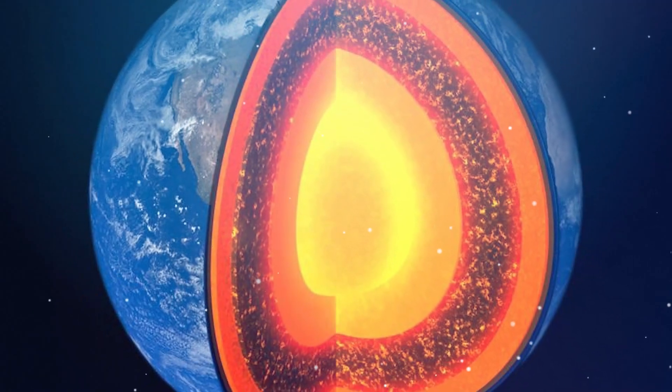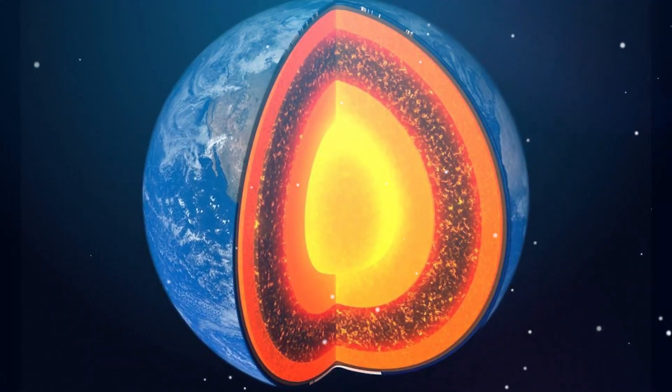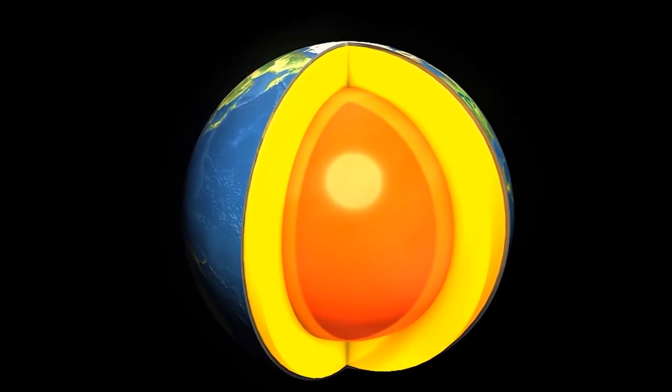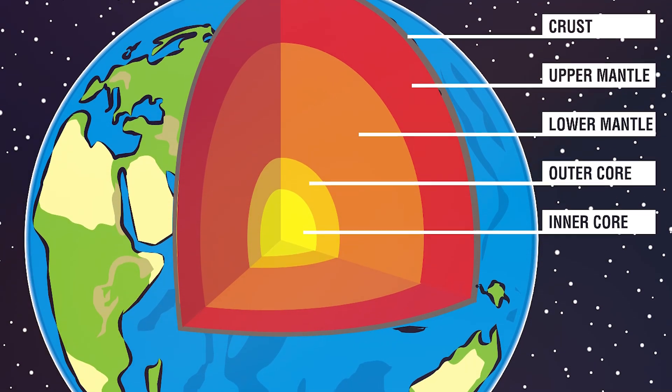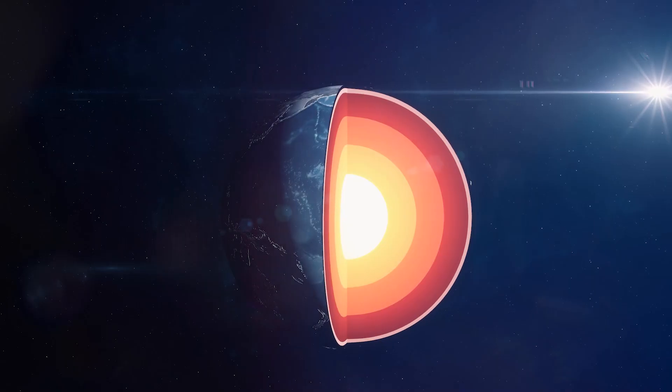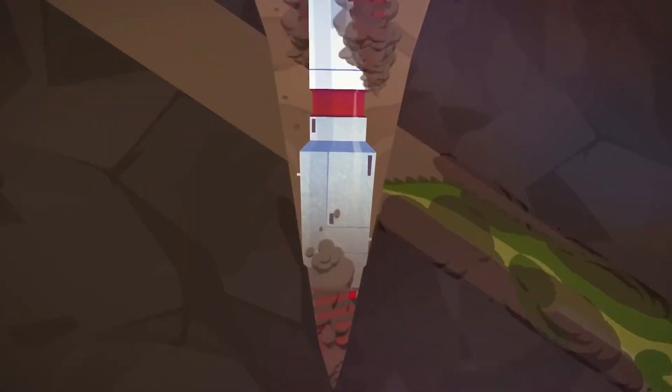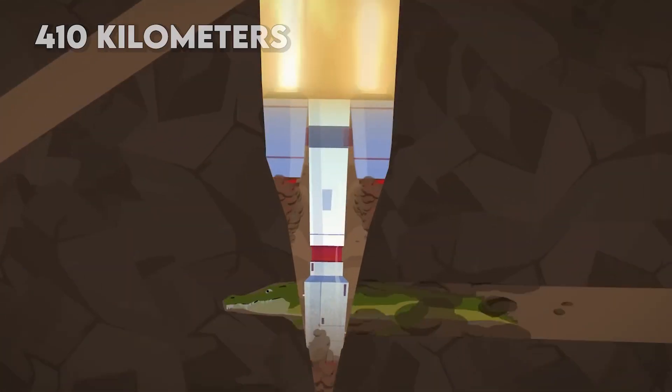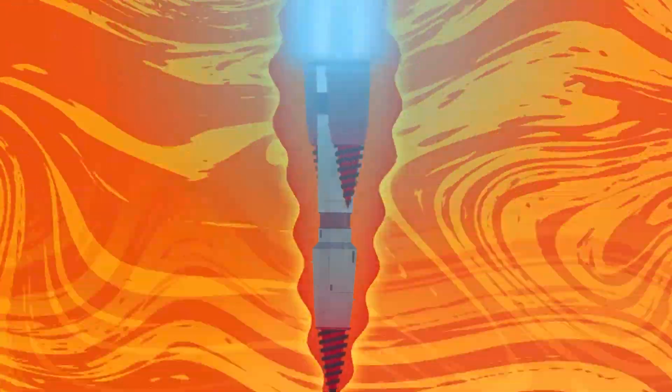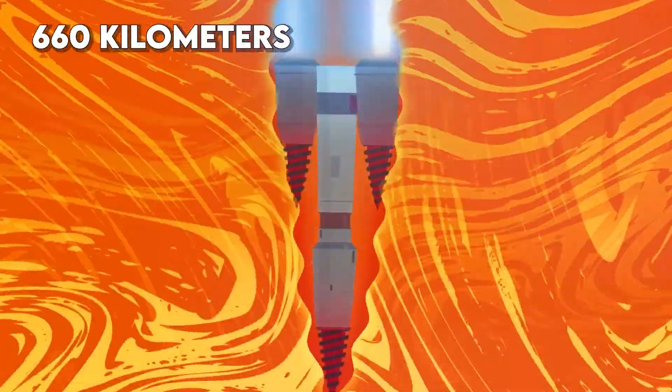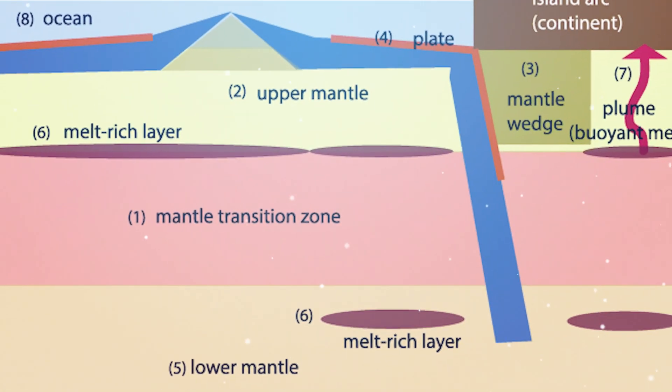And get this—the mantle's not just one uniform substance. It has different layers with various depths and temperatures. The uppermost part of the mantle is called the upper mantle, extending from the base of the crust to a depth of about 410 kilometers. Below that lies the transition zone, reaching down to about 660 kilometers. Beyond this point, we enter the lower mantle, stretching from 660 kilometers down to approximately 2,900 kilometers.